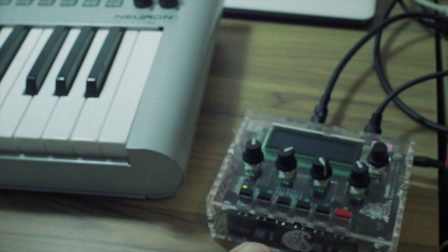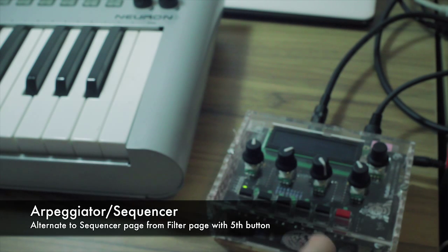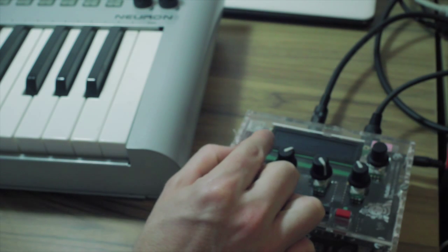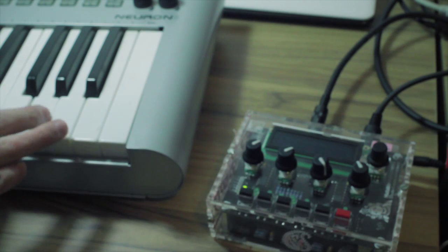Next up is the arpeggiator. Select between the filter board and the sequencer with this button here. Then you have your different modes that you can choose between sequencer, step sequencer, and the arpeggiator. Then just play a chord.